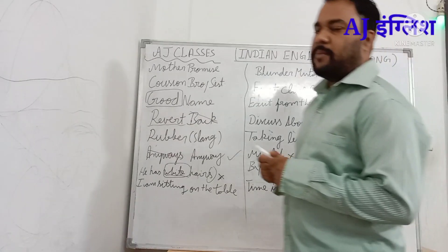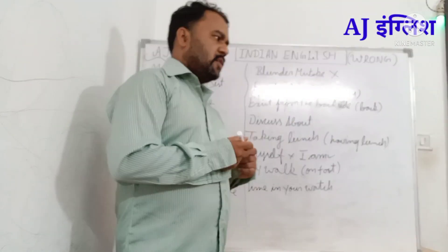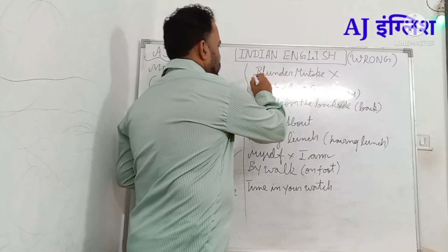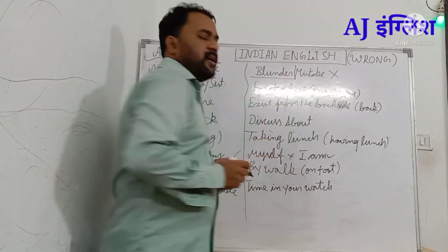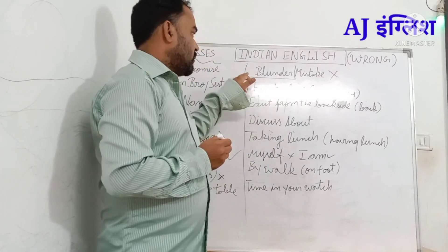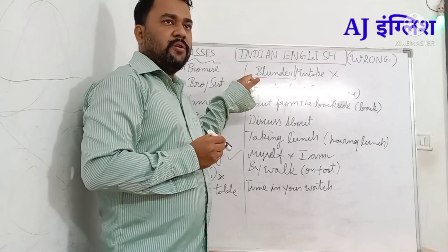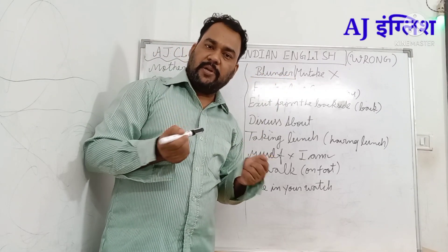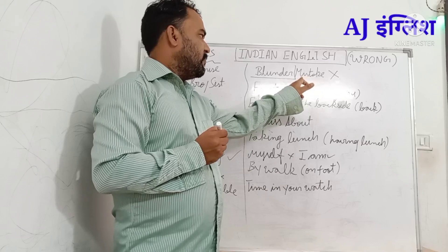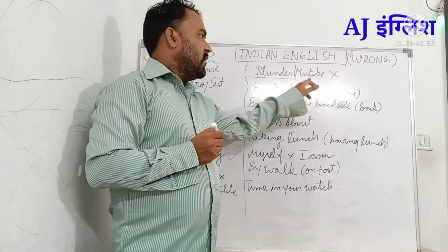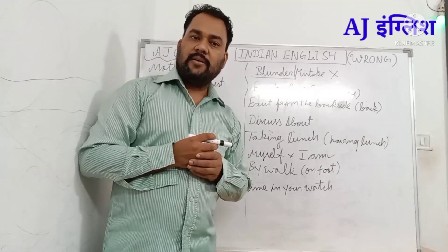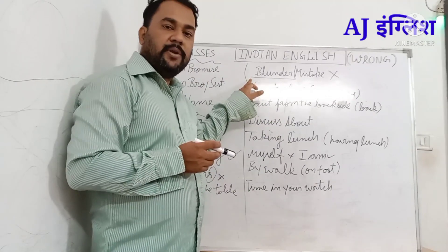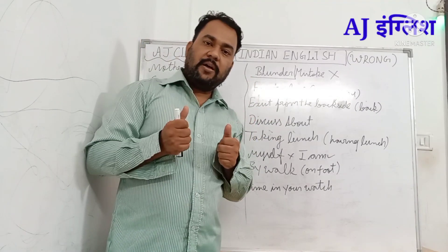People say 'you have made a blunder mistake,' but 'blunder' itself already means a big or major mistake, so you don't need to add 'mistake.' Just say 'you have made a blunder' or 'you have committed a blunder.' Also note: some people mispronounce it as 'blender' — the correct word is 'blunder.'